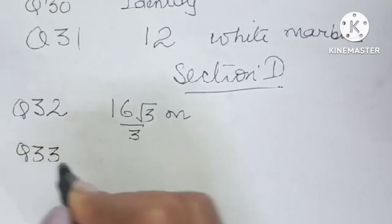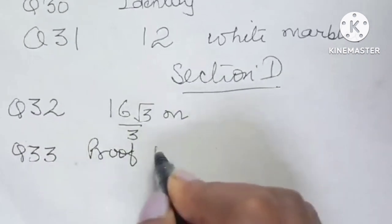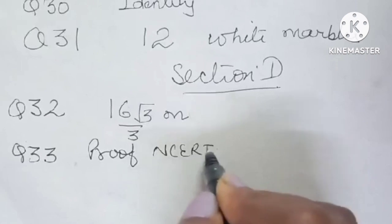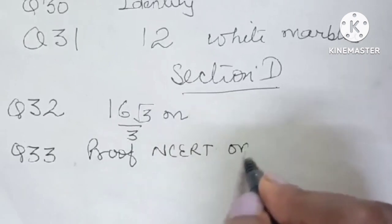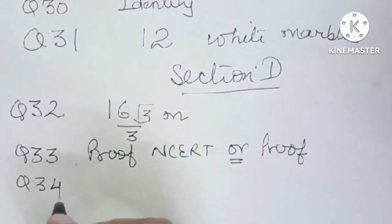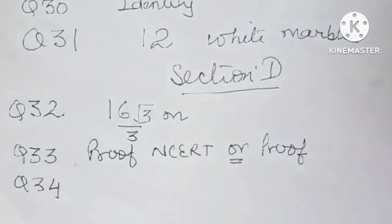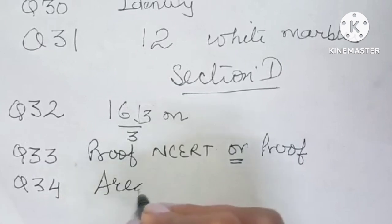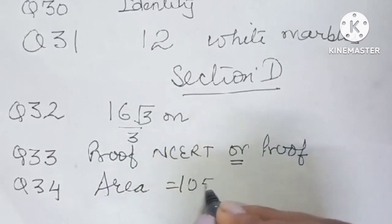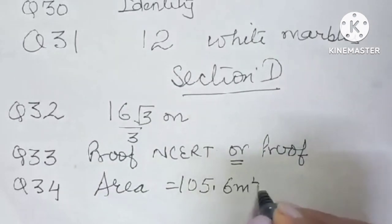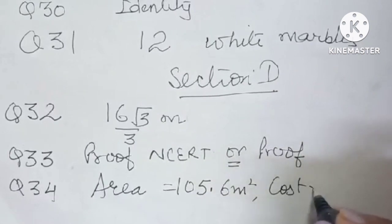Question number 33 is again proof of NCRT, and the or part is also a proof only. So you can do it. The area comes out to be 105.6 meters square, and the cost comes out to be Rs. 52,800.